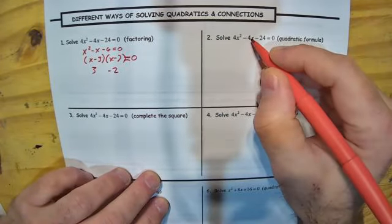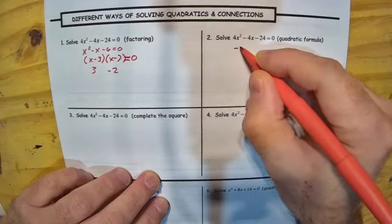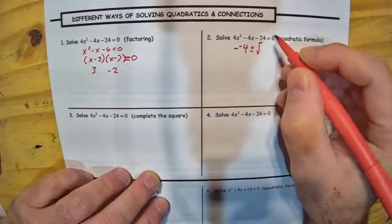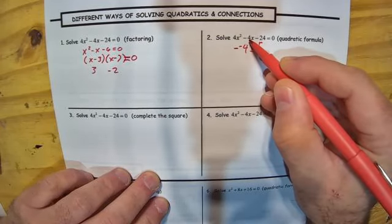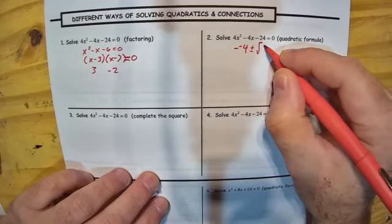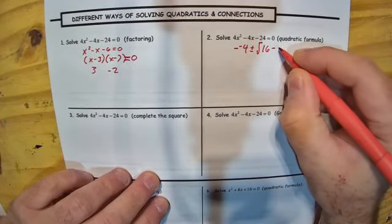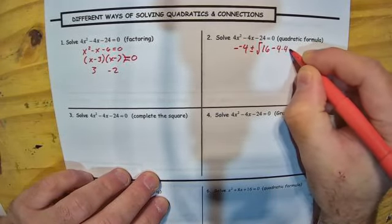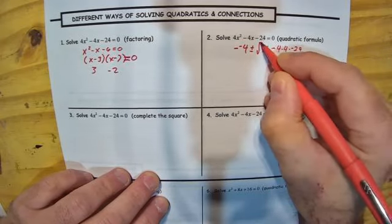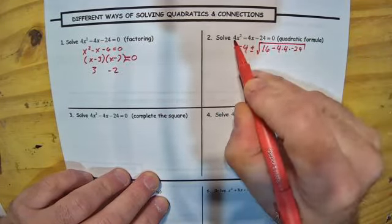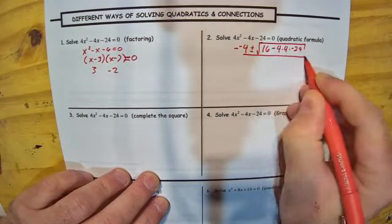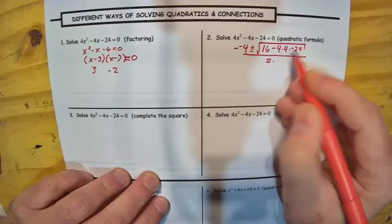The quadratic formula: negative b, so it's going to be negative negative 4 to start, plus or minus the square root of b squared — that's negative 4 squared. Don't forget the negative is getting squared with it, so it becomes positive 16, minus 4 times 4 times negative 24. That's b squared minus 4ac, where a is 4 and c is negative 24. Don't forget that negative sign. The whole thing is over 2 times a, in this case 2 times 4.